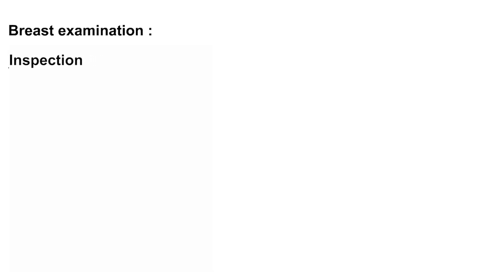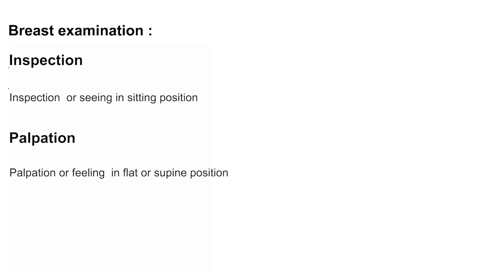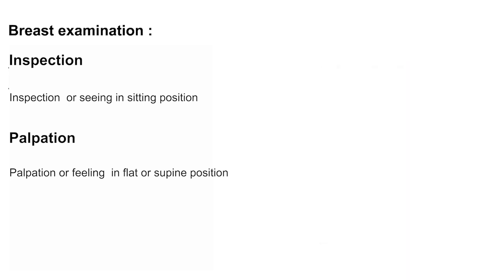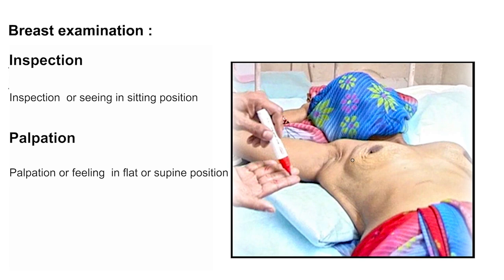Breast examination is carried out in two steps: inspection, or seeing the breast, and palpation, or feeling the breast. Inspection is best done in the sitting position and palpation is best done in the flat or supine position. You can remember it like this: seeing in sitting — S for S; and feeling in flat — F for F.